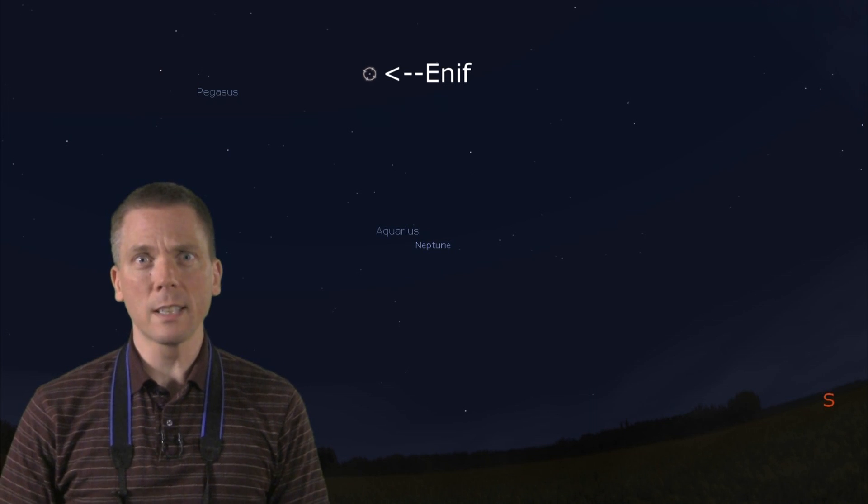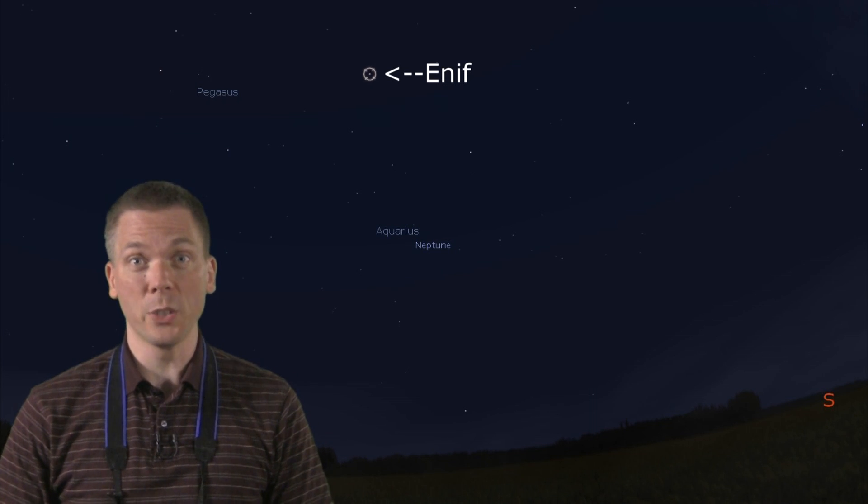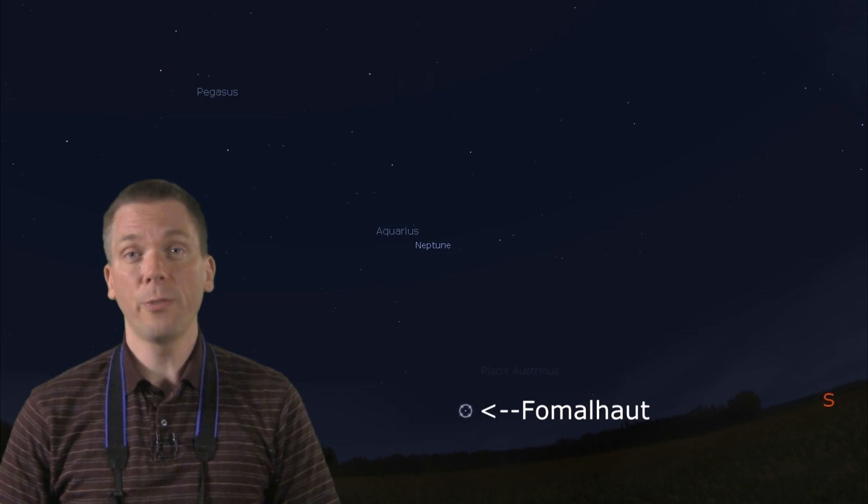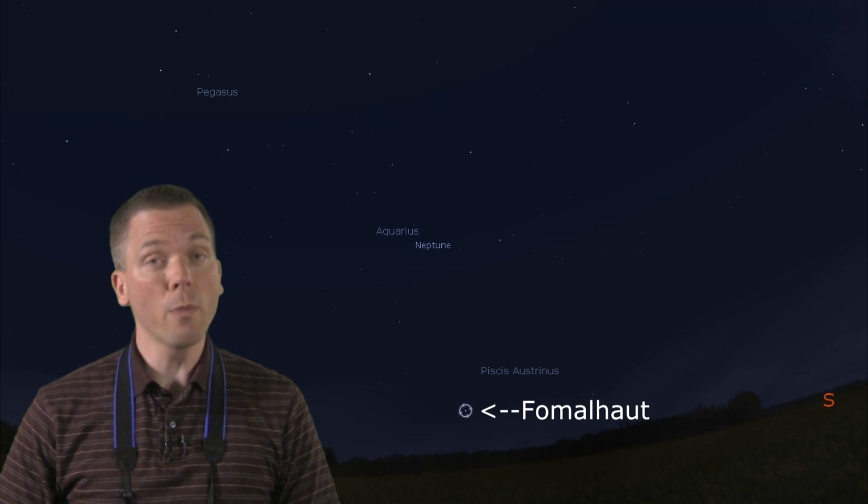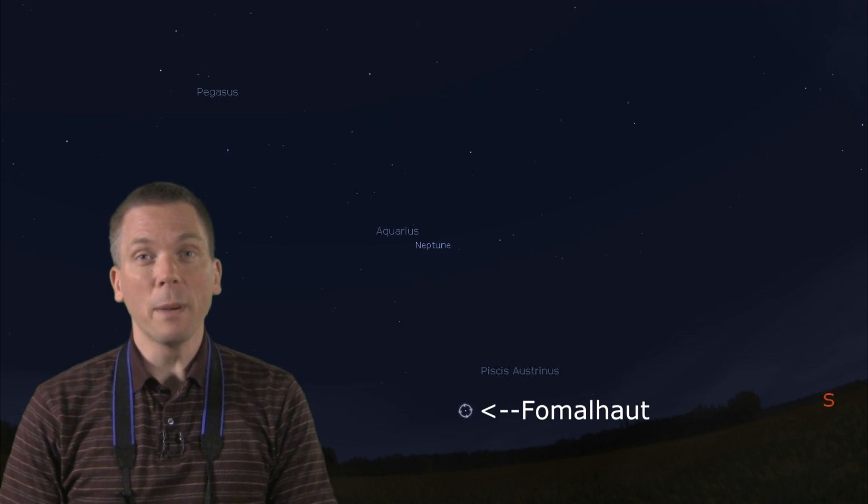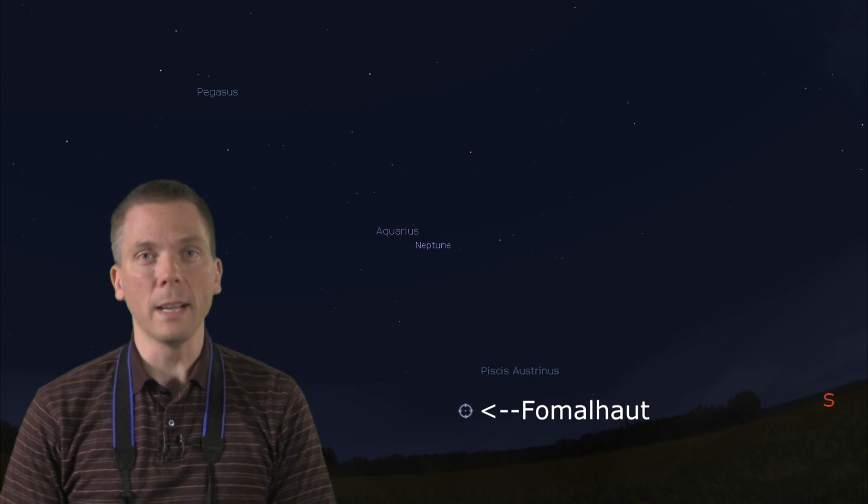Well below it, but probably looking similar in brightness, despite being magnitude 1.2, is the star Fomalhaut. It will be hard to miss it, it's the only bright star or object over third magnitude in that area, but it is a good 40 degrees away from Enif too.